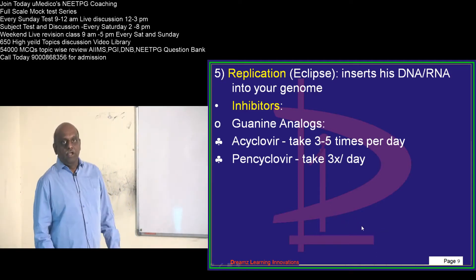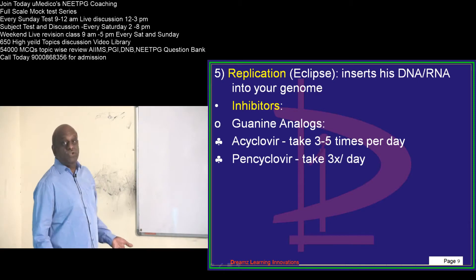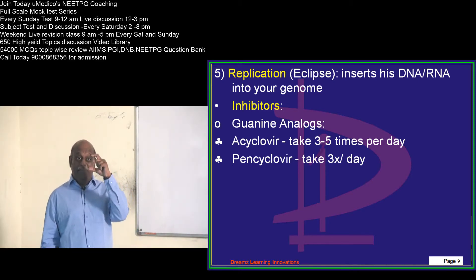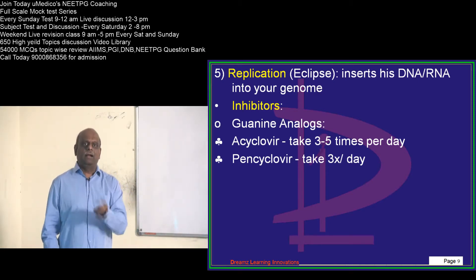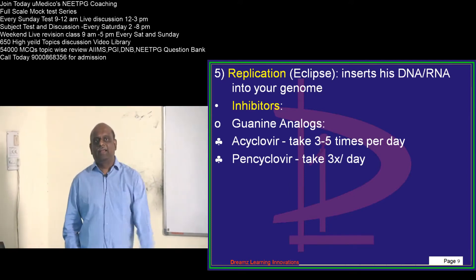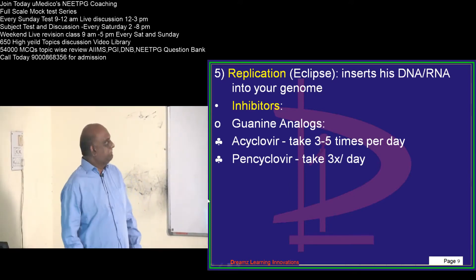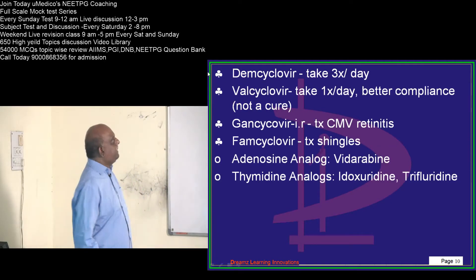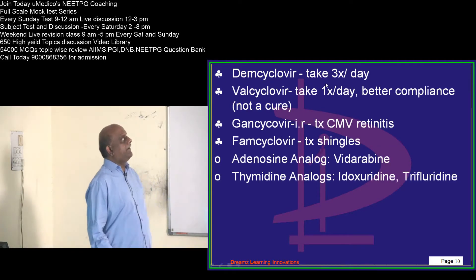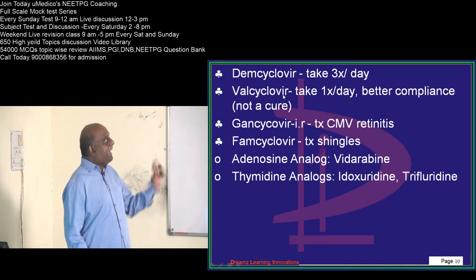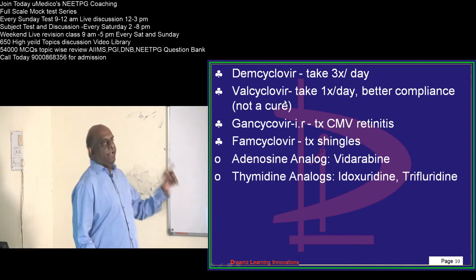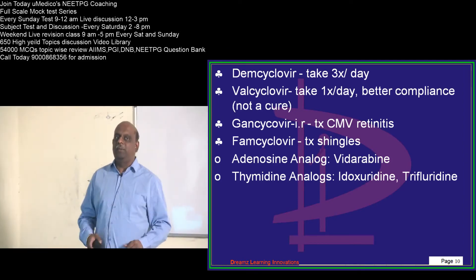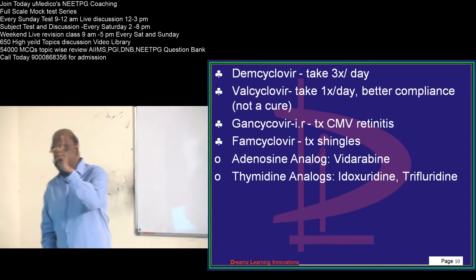Acyclovir requires almost three to five times per day dosing at 800 mg per tablet, which is very taxing. Pencyclovir is taken three times daily. Valacyclovir offers better compliance unlike acyclovir because it is taken only once a day.